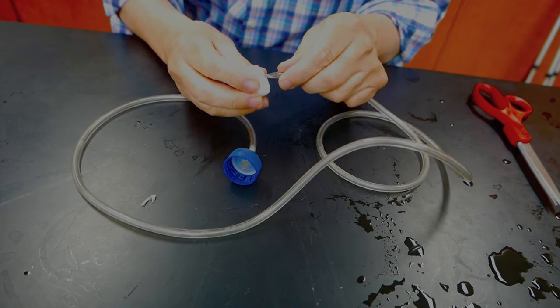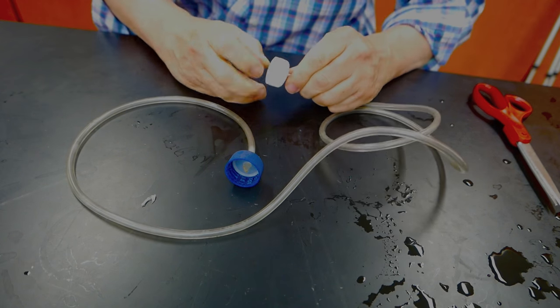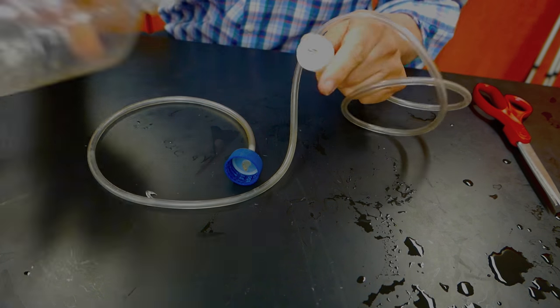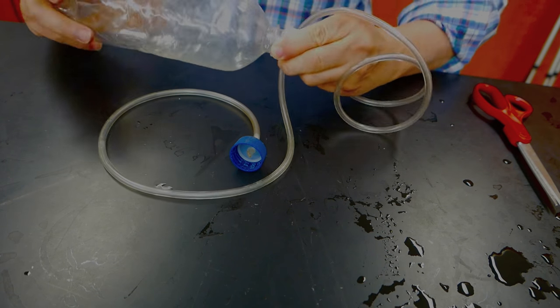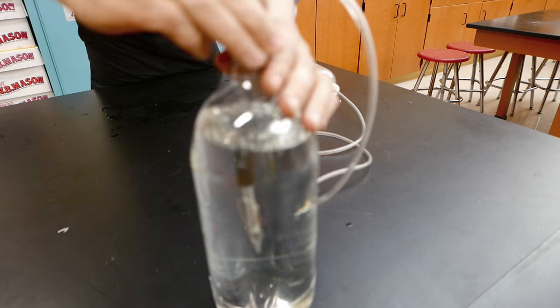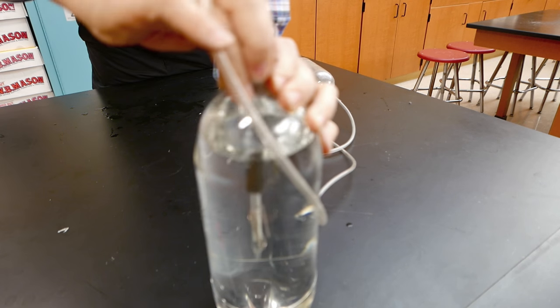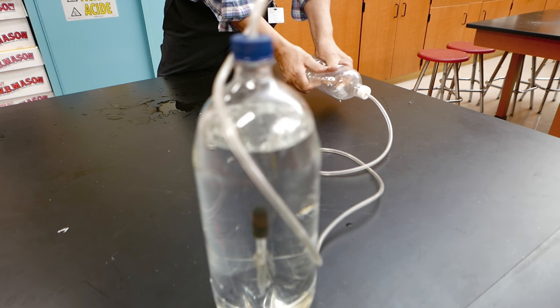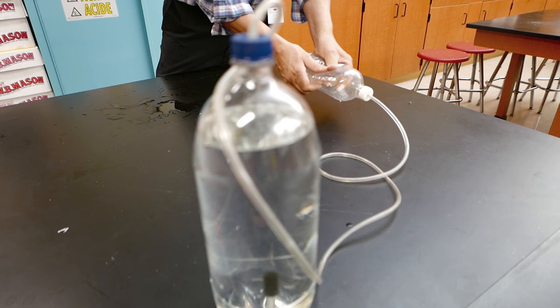If we have two caps with holes in them and a long tube, we can make a remote control. Now the hole has to be one size smaller than the tube. Simply push the tube through. Connect it to a smaller bottle. This will be the remote control. The other end is fastened to the bottle with the diver in it. There we go. Squeeze the bottle. And down it goes. Release it. It comes back up. It's a good example of Pascal's principle.